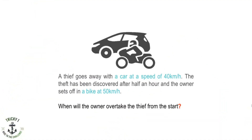The thief goes away with the car at a speed of 40 km per hour. The theft has been discovered after half an hour, and the owner sets off on a bike at 50 km per hour. When will the owner overtake the thief from the start? Try it by yourself first — once you are ready, press the play button.